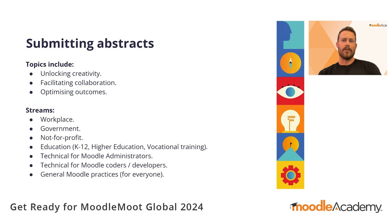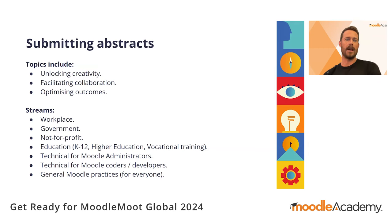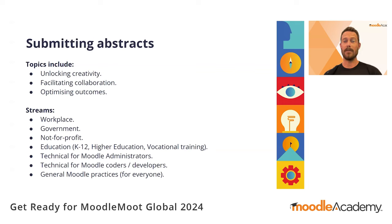This year's conference will address different topics aligning with the Moodle product vision. This year's three topics are Unlocking Creativity, Facilitating Collaboration, and Optimizing Outcomes. You'll also need to choose one of these streams: Workplace, Government, Not-for-profit, Education, Technical for Moodle admins, Technical for Moodle coders or developers, and General Moodle practices for everyone. There's a link on the website to help you think about these topics in more detail — see our Become a Speaker page.